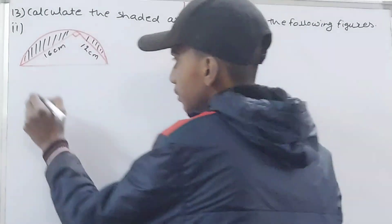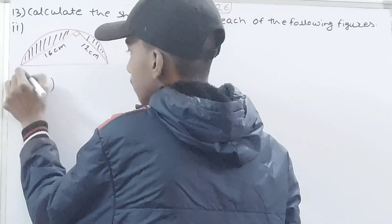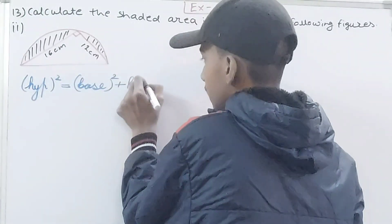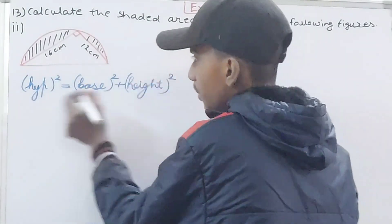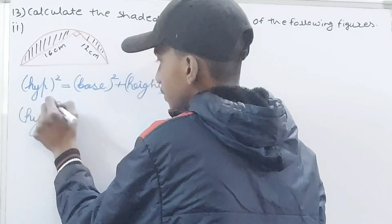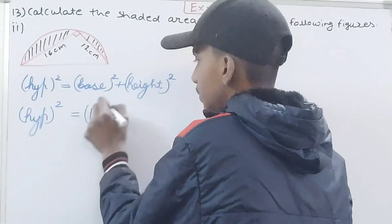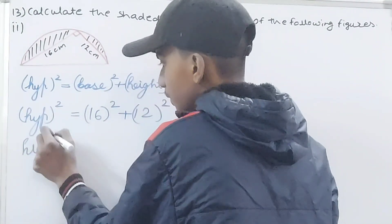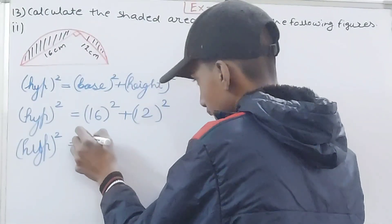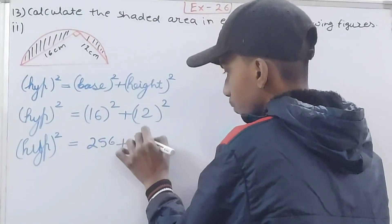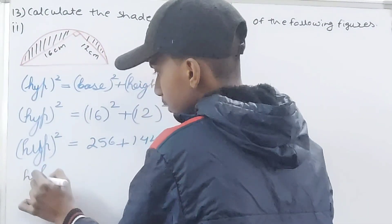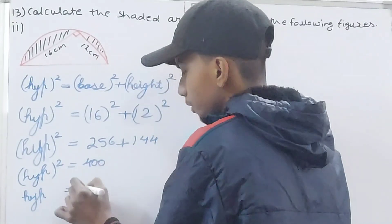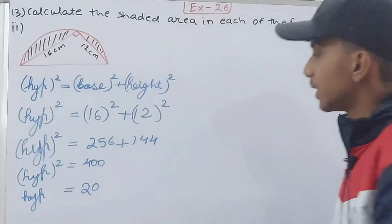We'll use the Pythagorean theorem: hypotenuse² = base² + height². Putting in the values: hypotenuse² = 16² + 12² = 256 + 144 = 400. So hypotenuse = √400 = 20 centimeters.